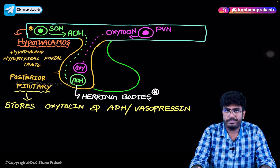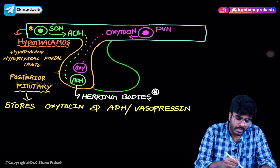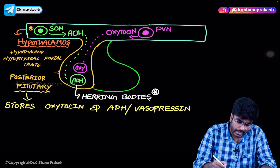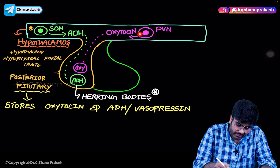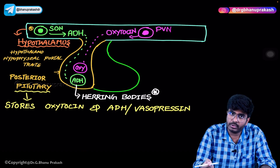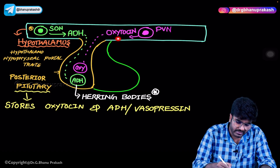The first is the supraoptic nucleus (SON) — this green nucleus I'm pointing to. The supraoptic nucleus produces anti-diuretic hormone. The second nucleus is the paraventricular nucleus (PVN), also present in the hypothalamus, and it helps in the production of oxytocin.